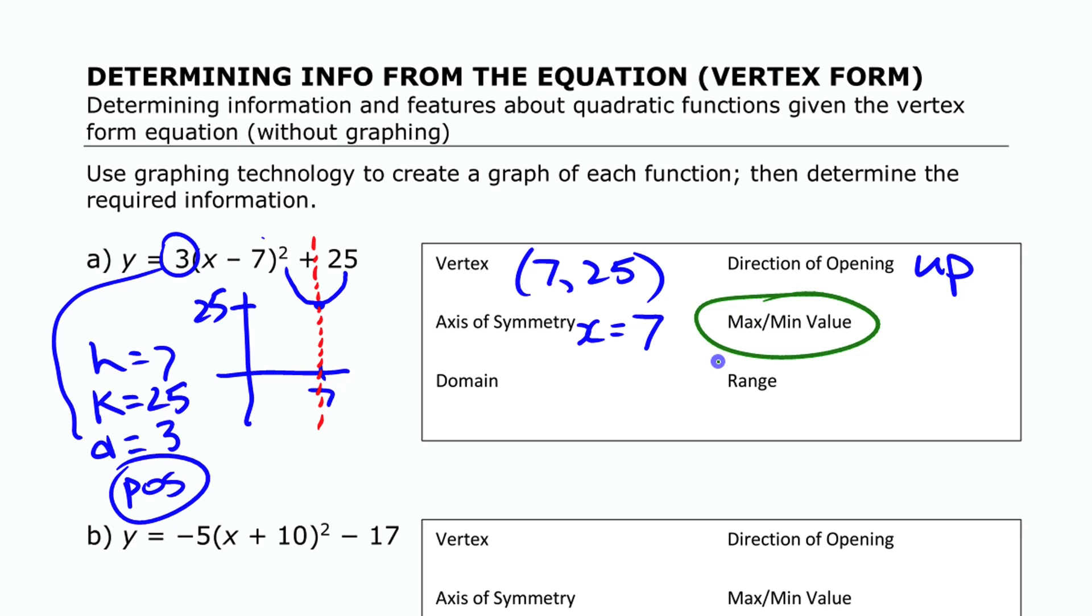Our max or min value, first of all, the fact that it opens up means it's going to have a minimum value. This is the lowest it goes. The lowest value and we're just visualizing the graph, but this would just keep opening up. It keeps getting taller, but it also keeps getting wider. Eventually it's going to cover everything on the x-axis. It's going to cover all real values of x. So we're going to put all real numbers.